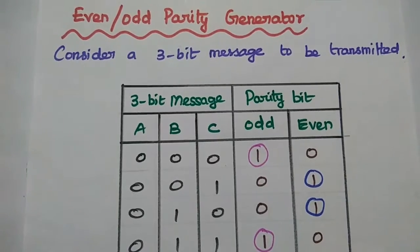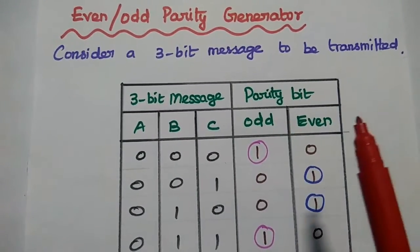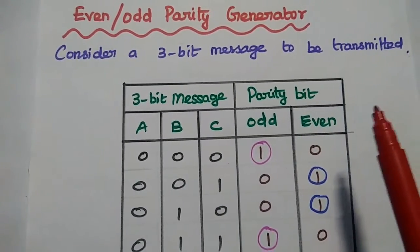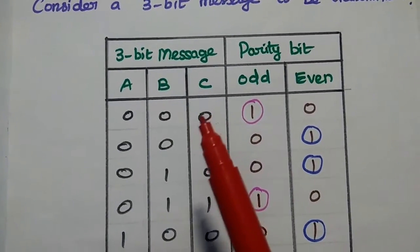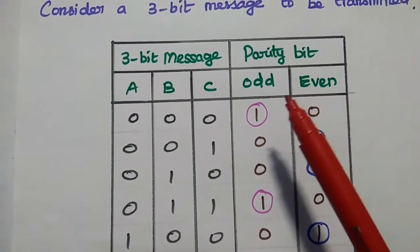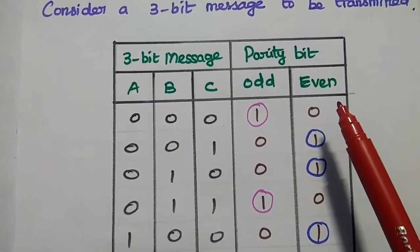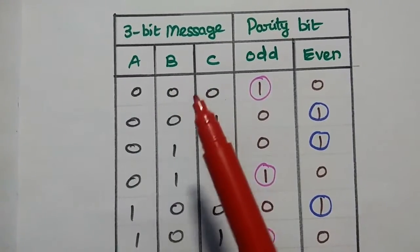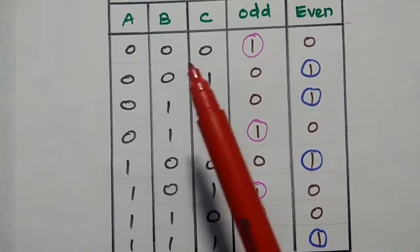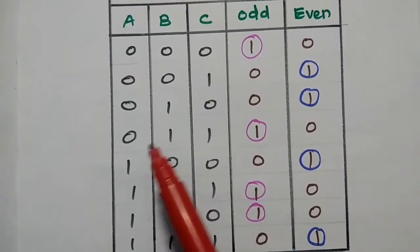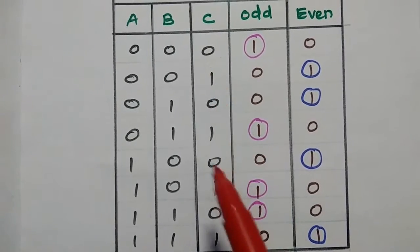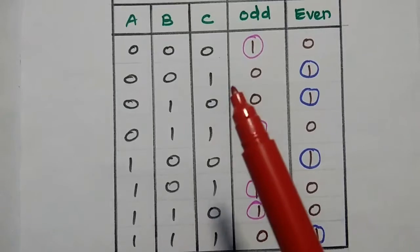Next, we are going to discuss even-odd parity generator. Here we consider a 3-bit binary message to be transmitted, represented as ABC. With 3 bits, we can generate 8 possible message signals: 000, 001, 010, 011, 100, 101, 110, 111.